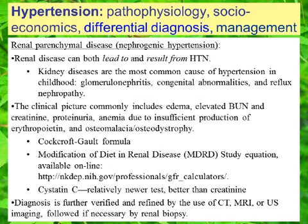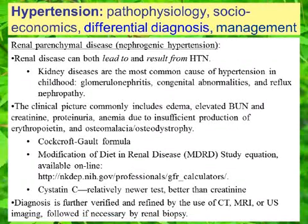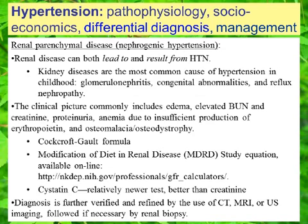Based on that estimate of the glomerular filtration rate, we can determine to what extent the patient is or is not in renal insufficiency. Another relatively newer formula that can be used to assess renal function based on serum creatinine and the patient's age is the Modification of Diet in Renal Disease Study Equation — the MDRD study equation — available online at the provided link.